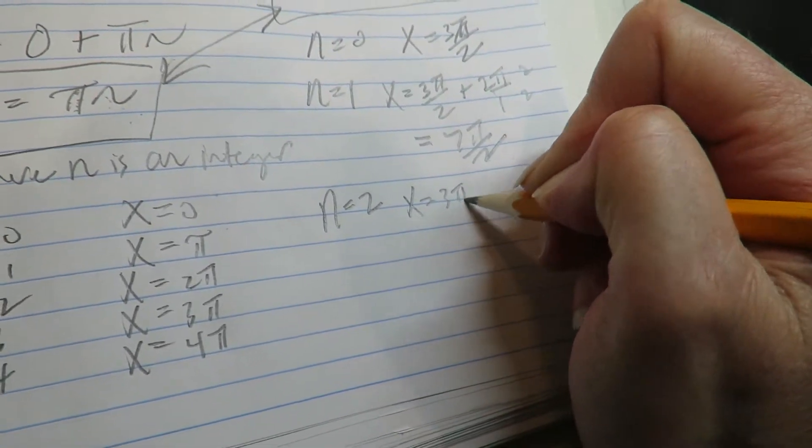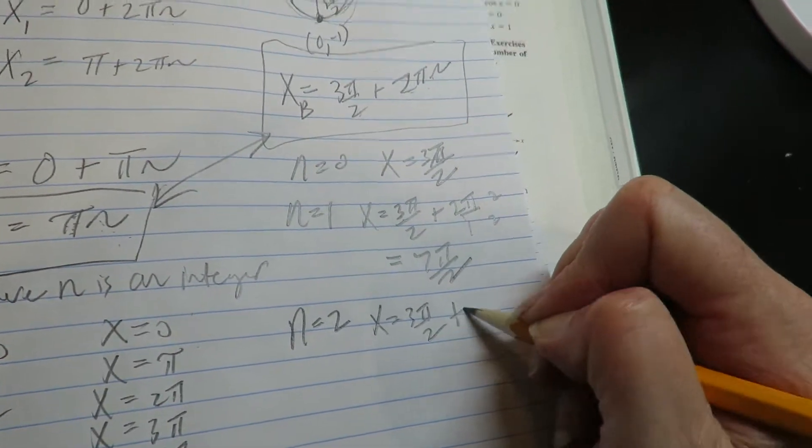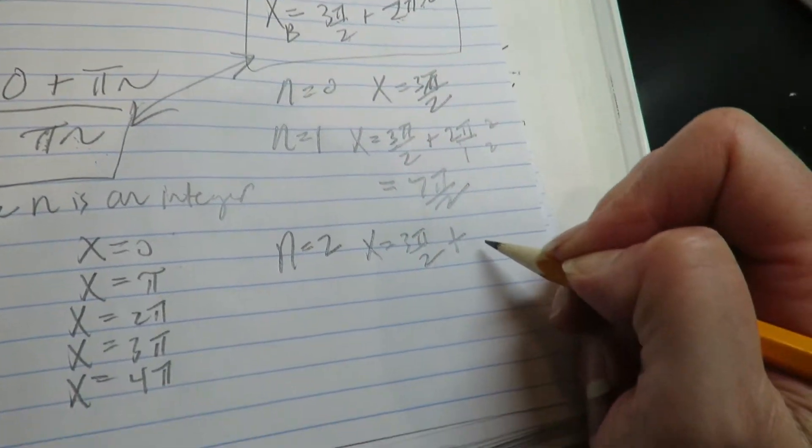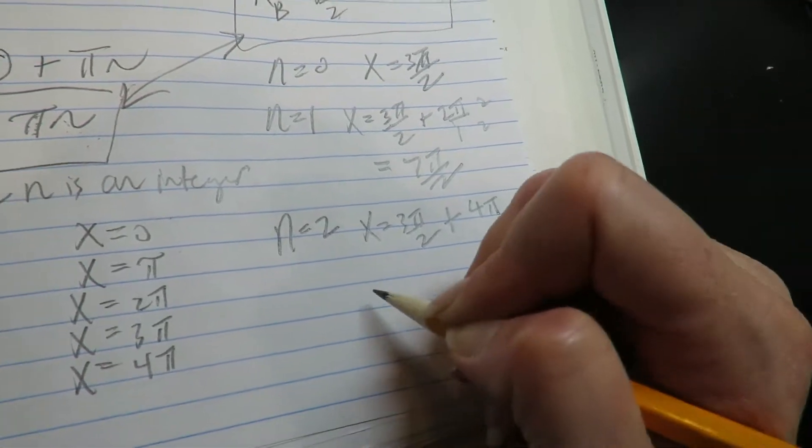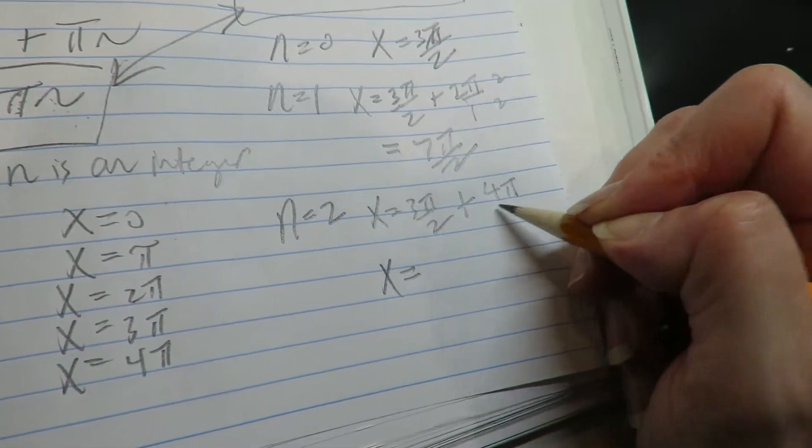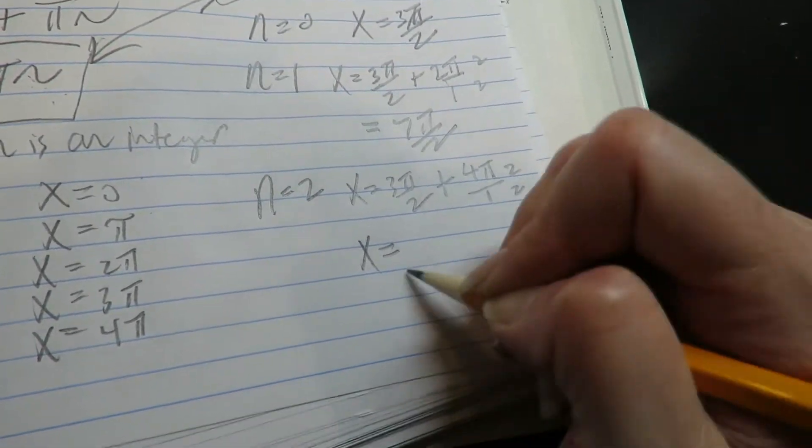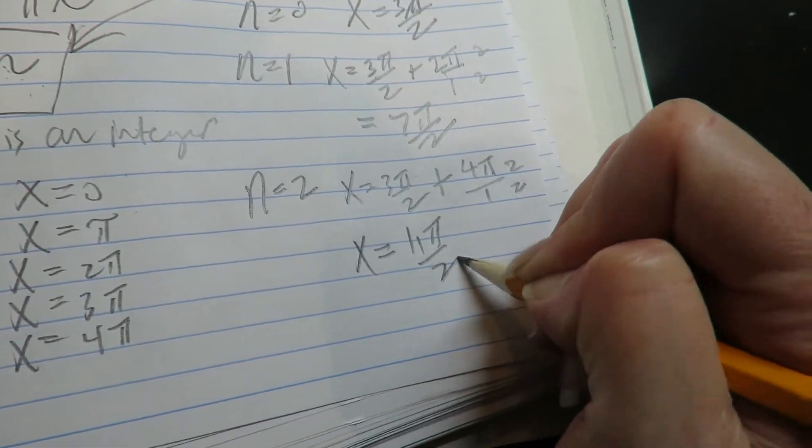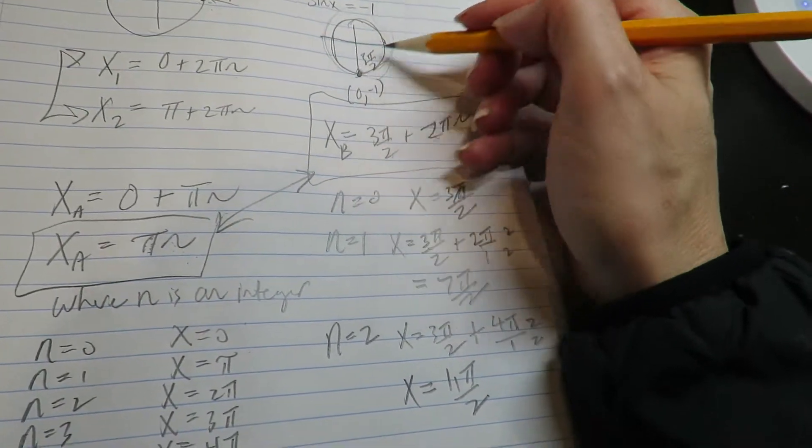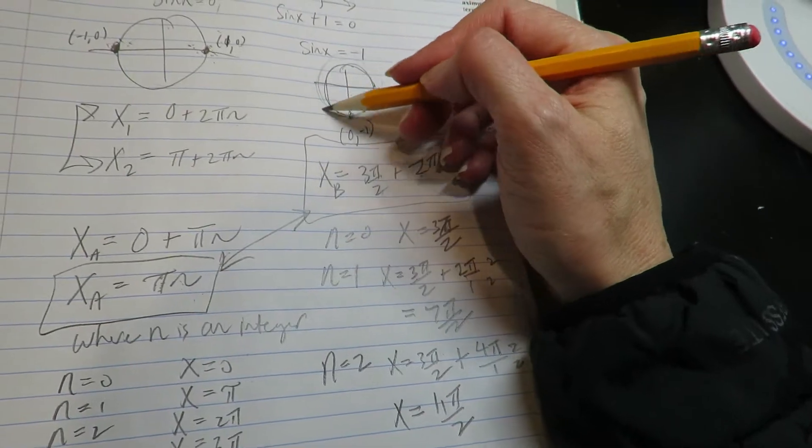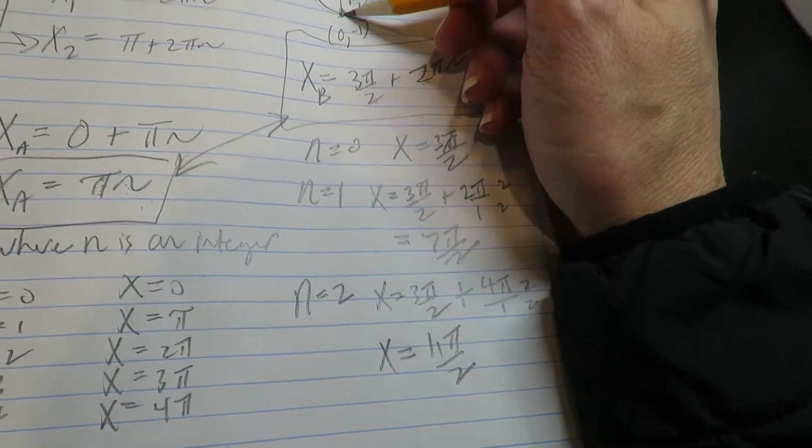Then we can have three pi over two plus two times two pi, which is adding four pi. So now get an LCD, eight plus three is 11 pi over two. Right, so the first one was three pi over two. The next one was seven pi over two. The next time we come around, it's 11 pi over two.